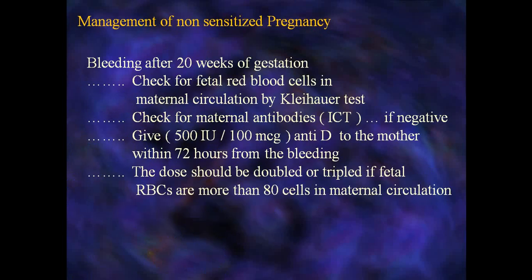The RH-negative pregnant woman who develops vaginal bleeding should receive prophylactic anti-D within 72 hours of the bleeding. For bleeding after 20 weeks of gestation, check for fetal RBCs in maternal circulation by Kleihauer-Betke test and for maternal antibodies by indirect Coombs test. If negative, give 500 international units — double the earlier dose — because increased fetal size and amniotic fluid volume means more RBCs may be involved. The dose should be doubled or tripled if fetal RBCs exceed 80 cells detected by the Kleihauer-Betke test.